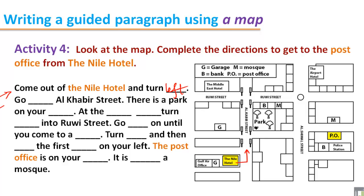Next, the second line says: go along Al-Khabir Street. At the traffic lights, the road goes another way and could lead to the post office, but that is not Al-Khabir Street, so we cannot take that way. We have to come out of the Nile Hotel and go straight along Al-Khabir Street. So we write: go along Al-Khabir Street.